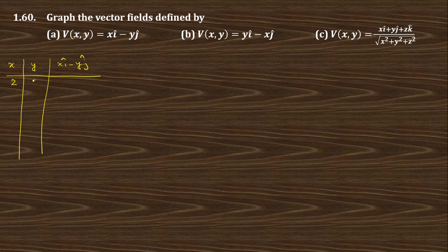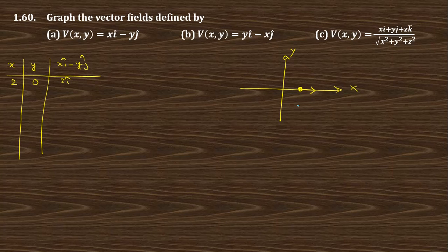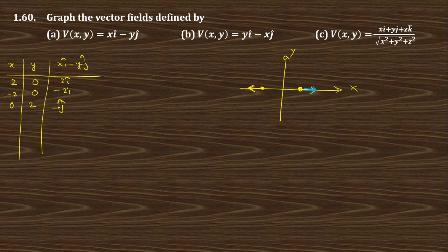First, take the point (2, 0) — the value is 2i cap. Drawing the graph with x and y axes, the point (2, 0) is here and 2i cap means along that direction. Take (-2, 0) — that gives minus 2i cap, so at that point it is along that direction. Similarly, (0, 2) gives minus 2j cap — at that point, minus 2j cap means in the inward direction.